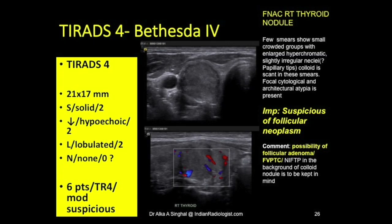Next case: TI-RADS 4. A 21 x 17 mm solid hyperechoic nodule — solid gets two, hyperechoic gets one, not taller than wide. Margins are slightly lobulated in some areas — lobulated gets two. No calcifications — zero. Total score: two plus one plus two equals five... scored as six, giving TR4 — moderately suspicious. Biopsy was suspicious for follicular neoplasm, possibly follicular variant of PTC.